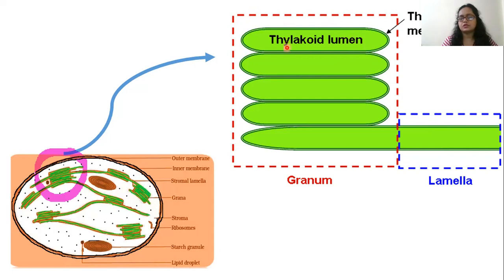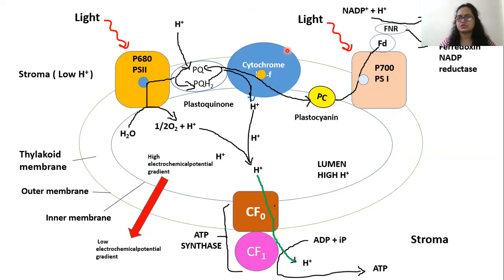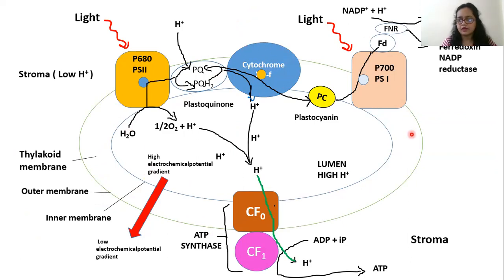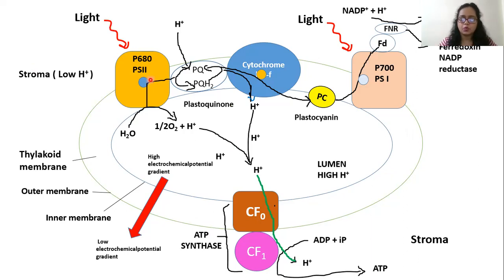This one disc of thylakoid is now elaborated in this picture. The double-layered membrane shows the presence of PS2, PS1, electron transport chain components, and the enzyme ATP synthase. This membrane in which both PS1 and PS2 are embedded is going to show how ATP is synthesized. The reaction center P680 of PS2, when excited by light energy, releases an electron which is accepted by the primary acceptor of the electron transport chain.